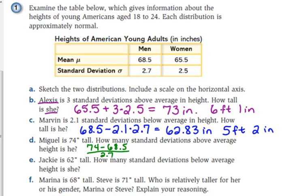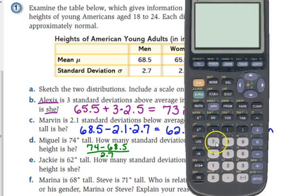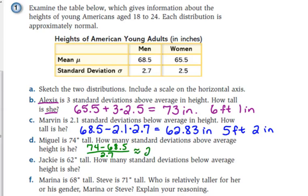So 74 minus 68.5 divided by 2.7. It's not an exact number, but it's pretty close to 2. About 2.03, so almost exact.